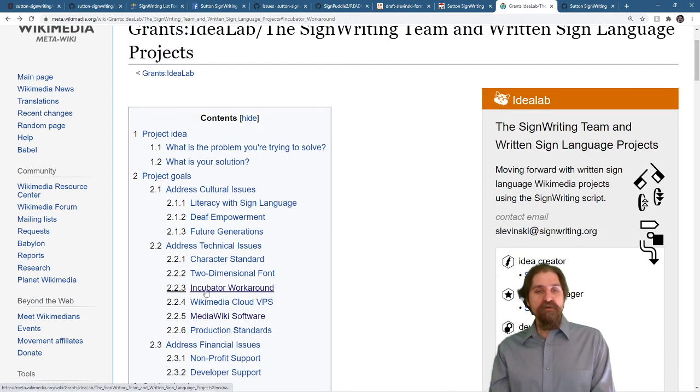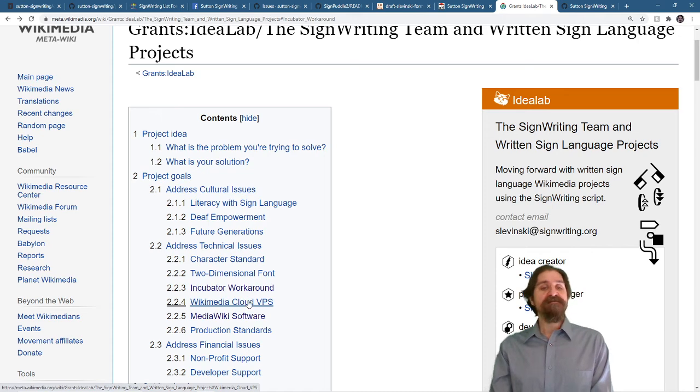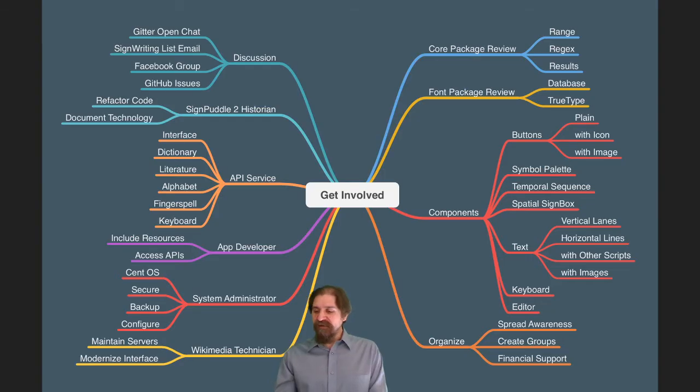Particularly if you go down here, you can find the information all about the Incubator and also the Wikimedia VPS Cloud. Incubator is where we have the user interface that needs to be improved and modernized. And the Wikimedia Cloud VPS, that is where we have several servers that are up and running that deal with sign writing. If you want to get involved and take over these projects, you would be most welcome to do that.